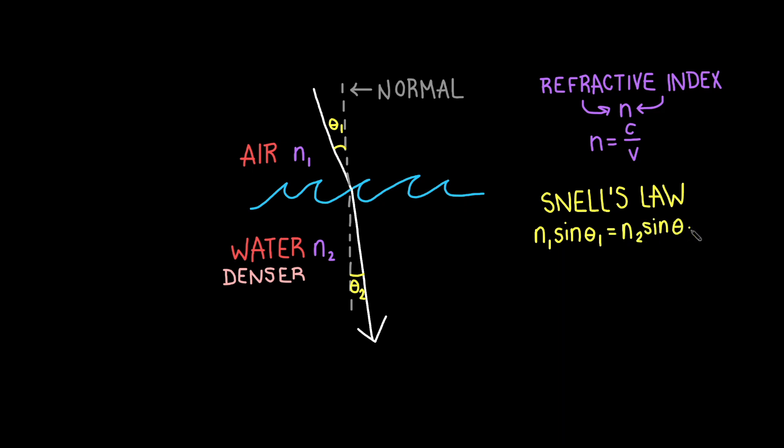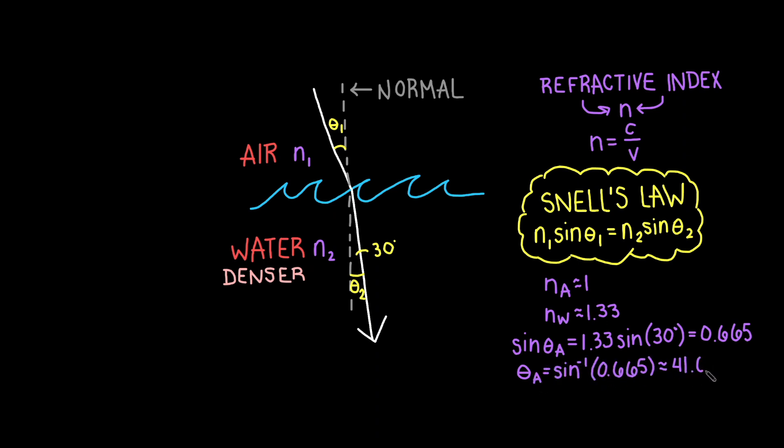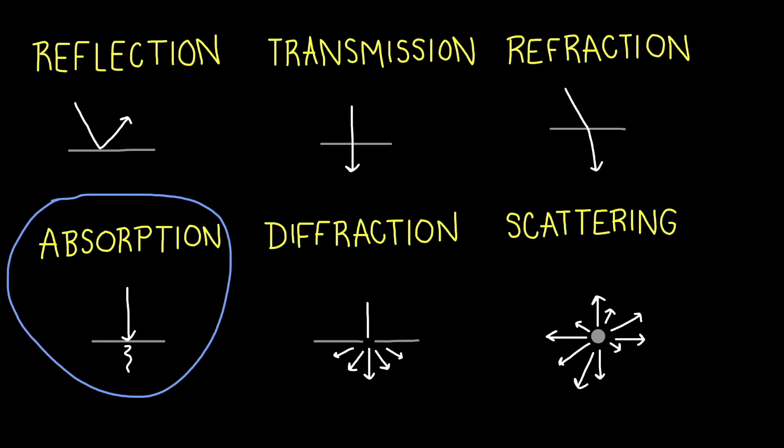So let's do an example. If light passes from air to water and travels through the water at an angle of 30 degrees, at what angle did it pass through the air? The refractive index of air is nearly one. The refractive index of water is 1.33. 1.33 times sine of 30 degrees is 0.665. Taking the inverse sine of 0.665, we find that the angle is 41.68 degrees. So we can say that the angle at which the light traveled through the air was 41.68 degrees.